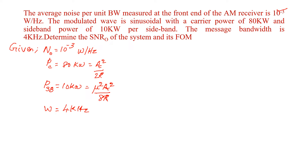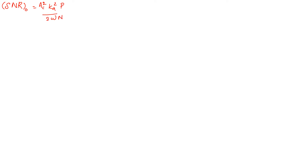We have to find the SNR output and the figure of merit. The signal to noise ratio at the output for AM is given by the formula: AC square times KA square times P, divided by 2W times N₀.